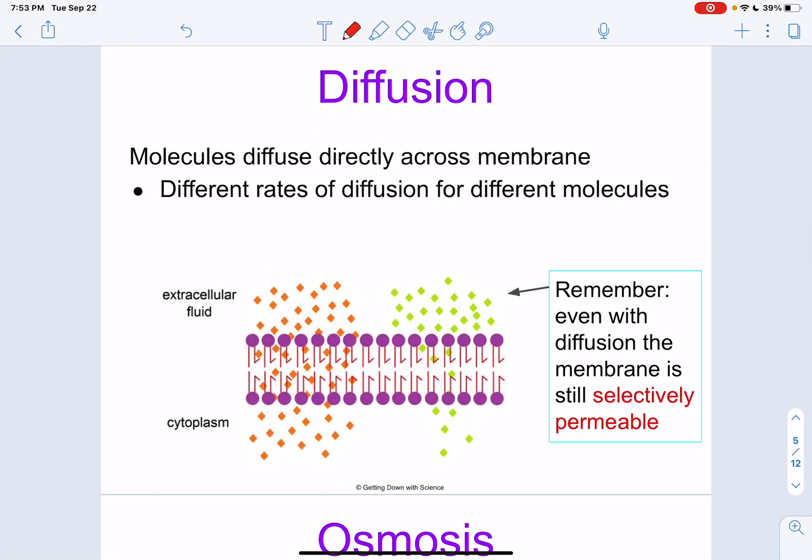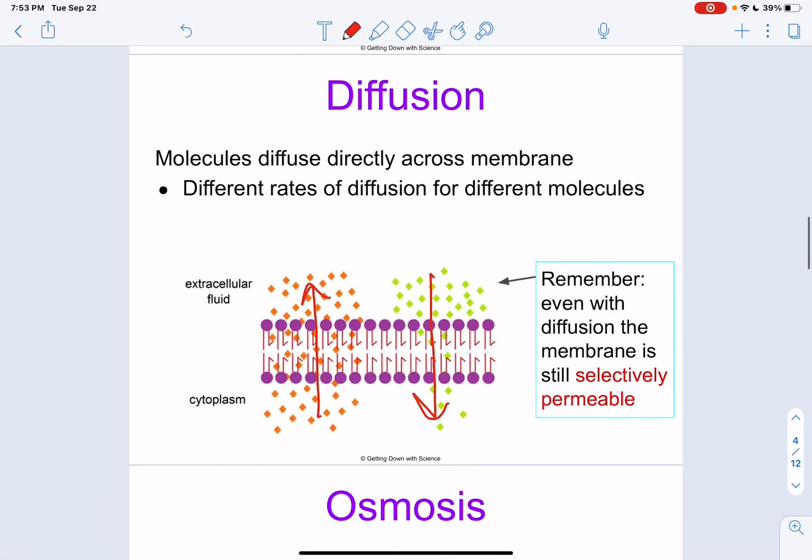Diffusion can happen directly across the membrane, like right here. These rates of diffusion depend on the different molecules we're talking about. It also depends on the structure of the molecules. Big things like glucose, or hydrophilic things will have a hard time getting through this membrane. And we've talked about in the membrane transport lecture about how these large materials get into the cell.